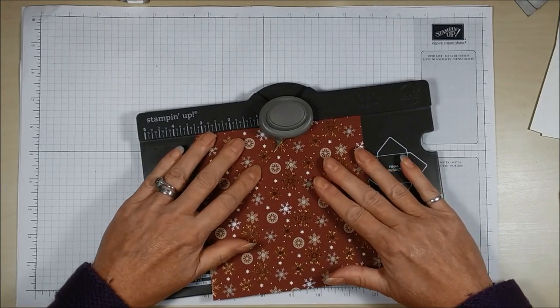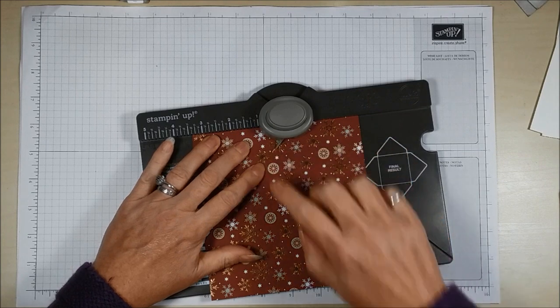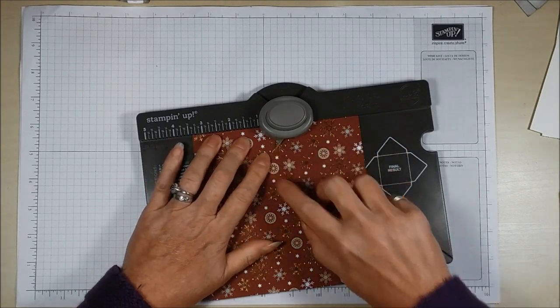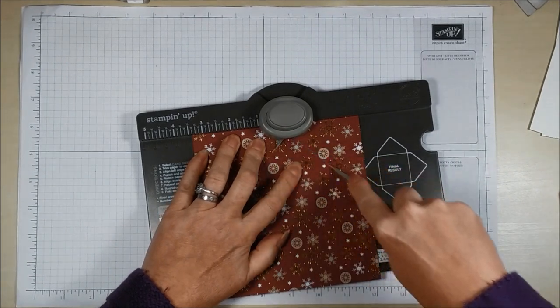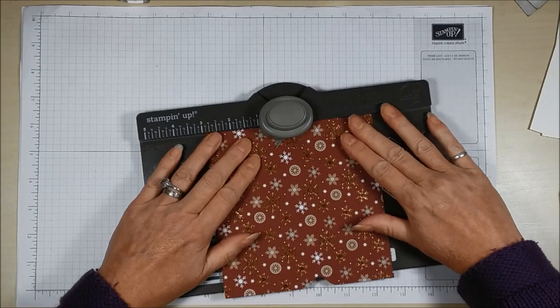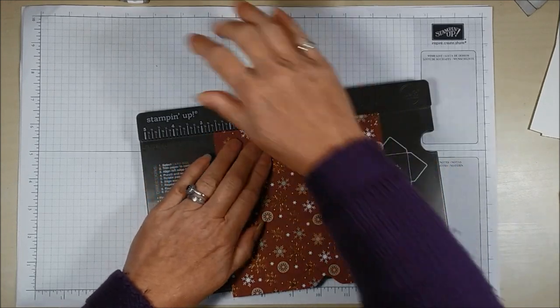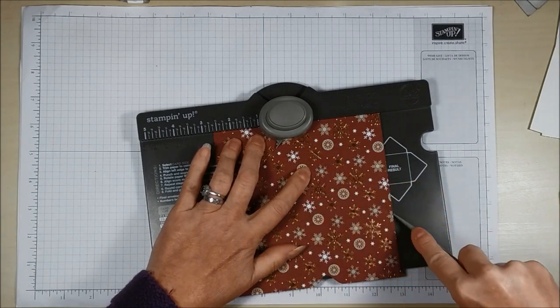We're going to turn the paper to the left, line up that scored line with this little pointer there, we're going to punch and score. Turn it again to the left, line up the score line with the pointer, punch and score.